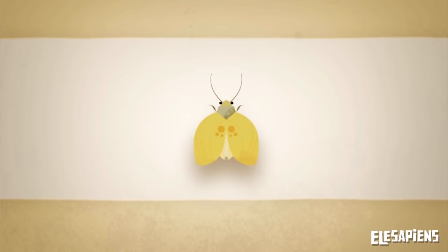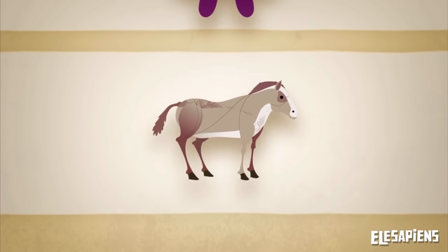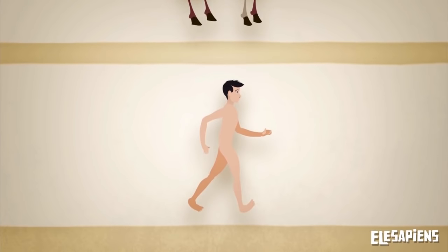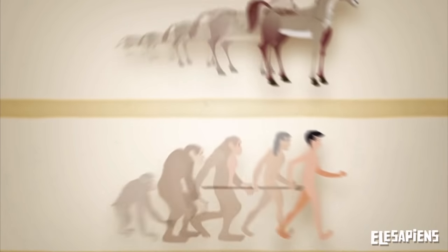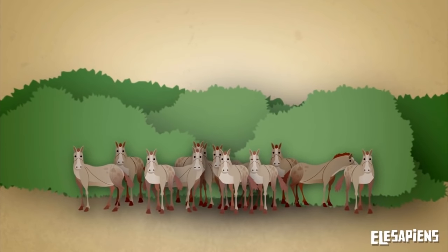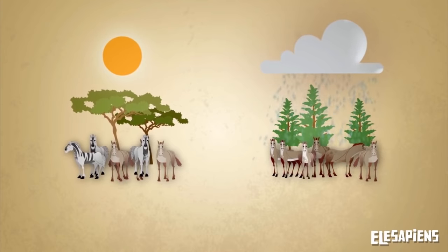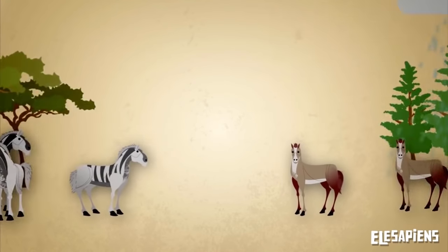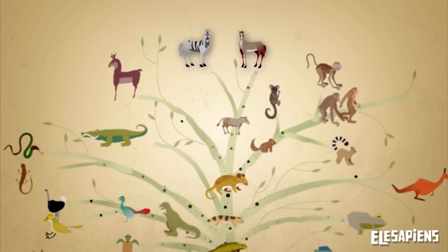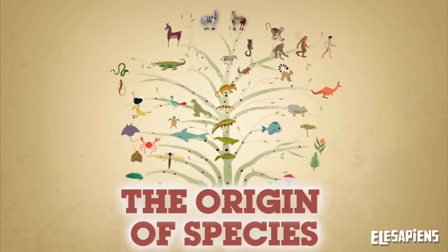With the passing of time, these favorable mutations accumulate and species change, constantly adapting to an environment that never stops changing. This is how the evolution of species takes place. Two groups of animals of the same species that adapt to two different environments over time can come to constitute different species. This way, a process as simple as natural selection helps us to understand the origin of species.